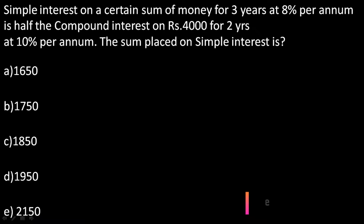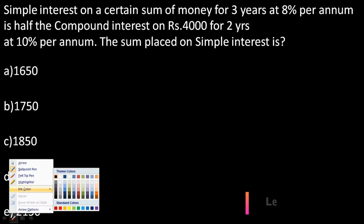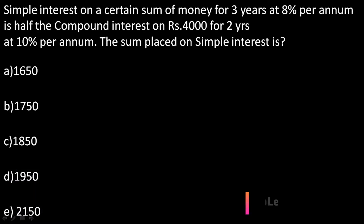Now we will see the first question. In this question, simple interest on a certain sum of money for three years at 8% per annum is half the compound interest on rupees 4000 for two years at 10% per annum. Find the sum placed on simple interest. So in this question, simple interest is nothing but half of compound interest.